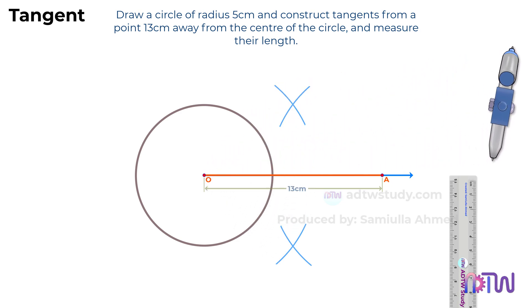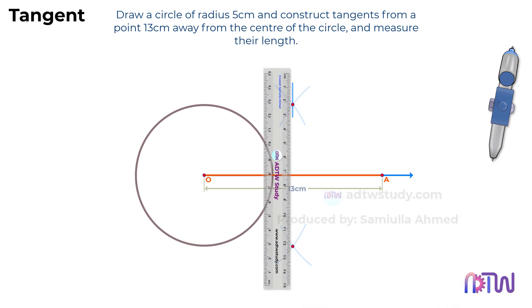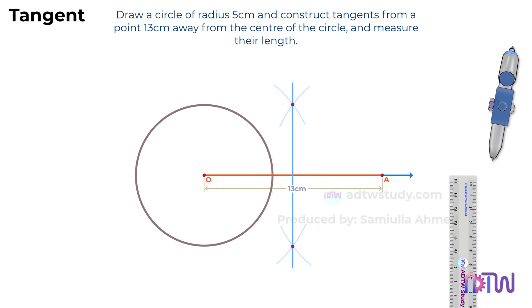After this, draw a line passing through these two points. This line is perpendicular to line OA and passes exactly through the center. Next, using this length as a radius and this point as a center, draw a circle.